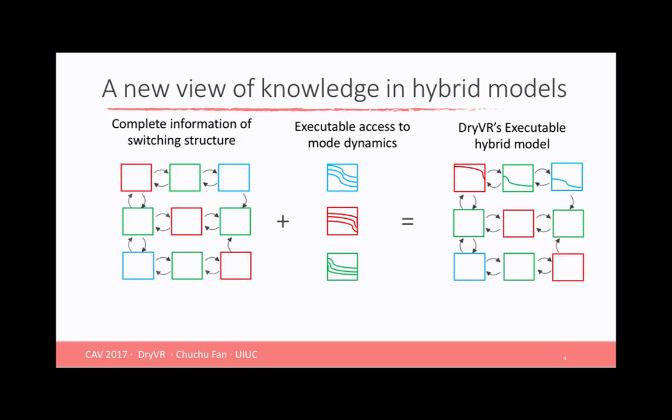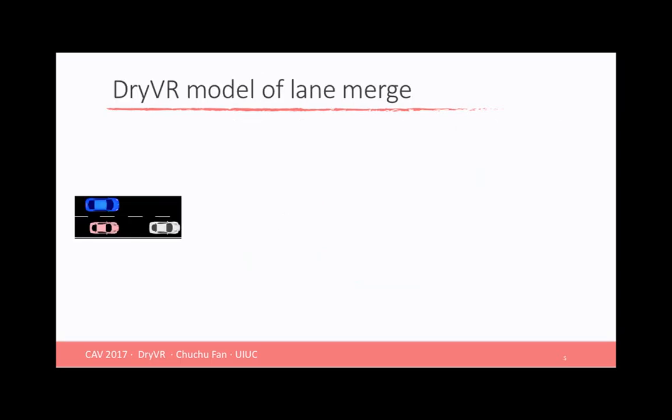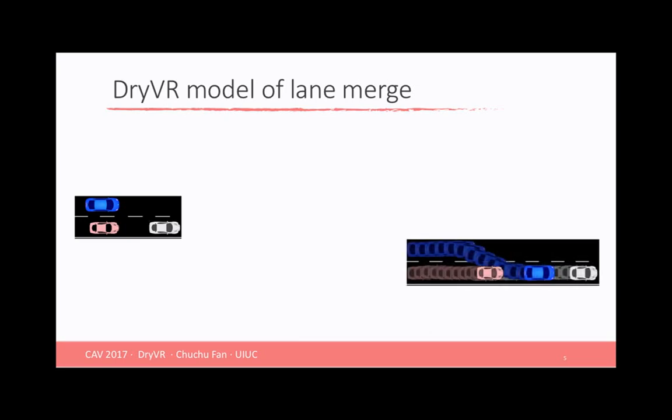So using this kind of view, how can we model this autonomous driving car, the blue one that is trying to merge the right lane? So the blue car on the top is our autonomous car. It's trying to merge the right lane. If the right car is nice, it's going to leave some space so the blue car can merge in front of it. So in this case, the right car is going to stay in the cruise mode, but the blue car is going to go through cruise, accelerate, turn right, then get back to the cruise mode.